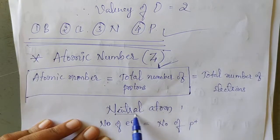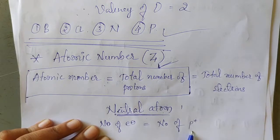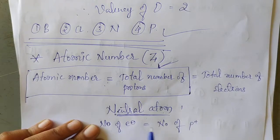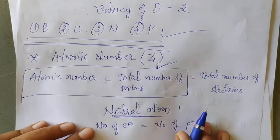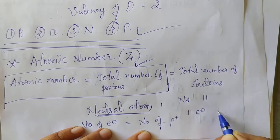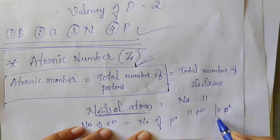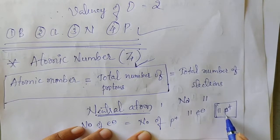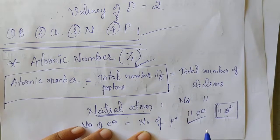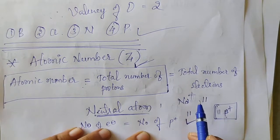Okay. A neutral atom means the atom which does not carry any charges. In that case, always number of electrons equals number of protons. Because of the presence of equal numbers of electrons and protons, there is no charge on the neutral atom. For example, if you take sodium, its atomic number is 11. In sodium, 11 electrons are there and 11 protons are there. When we remove one electron from a neutral sodium atom, it will have one positive charge. If we remove two electrons, it will have two positive charges.